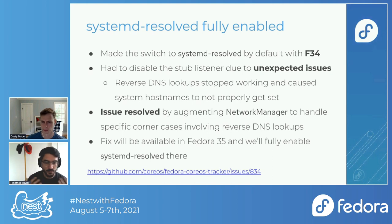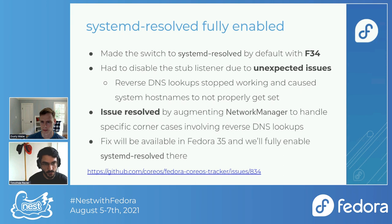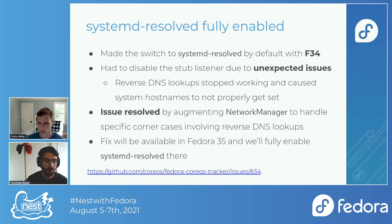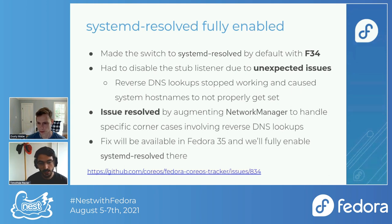The third item is systemd-resolved. We enabled systemd-resolved by default in Fedora CoreOS alongside the move to Fedora 34, same as the rest of Fedora. However, we found issues with it in some contexts — specifically with reverse DNS lookups and cascading problems. We had to disable the stub listener. The issue itself is resolved through work with the Network Manager team, but the fix will only be available in Fedora 35. So we have to wait until we rebase to Fedora 35 to get the full fix and enable systemd-resolved fully on nodes.